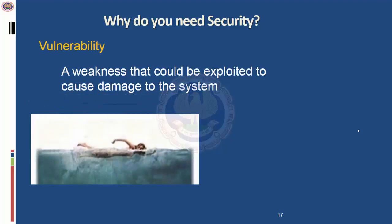The first term to understand is: why does an enterprise require security? Security is required because there are vulnerabilities. A vulnerability is an inherent weakness — for example, a person swimming in the ocean has an inherent vulnerability. A vulnerability is a weakness that could be exploited to cause damage to a system. By itself, vulnerability doesn't cause any problems — the problem is caused by threats.